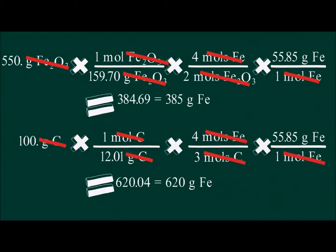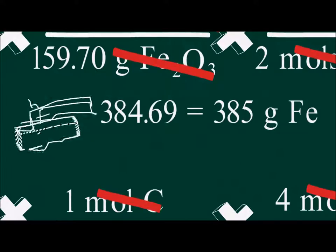620 grams of iron could be produced from 100 grams of carbon, and 385 grams of iron could be produced from 550 grams of hematite. This makes the limiting reagent hematite, and the theoretical yield of iron must be 385 grams.